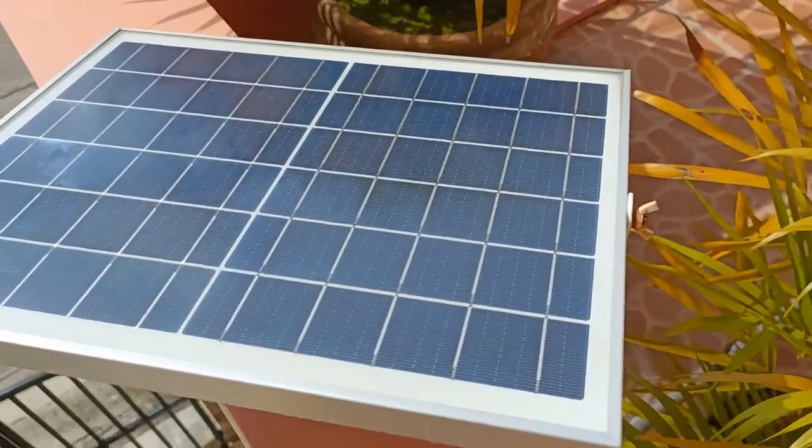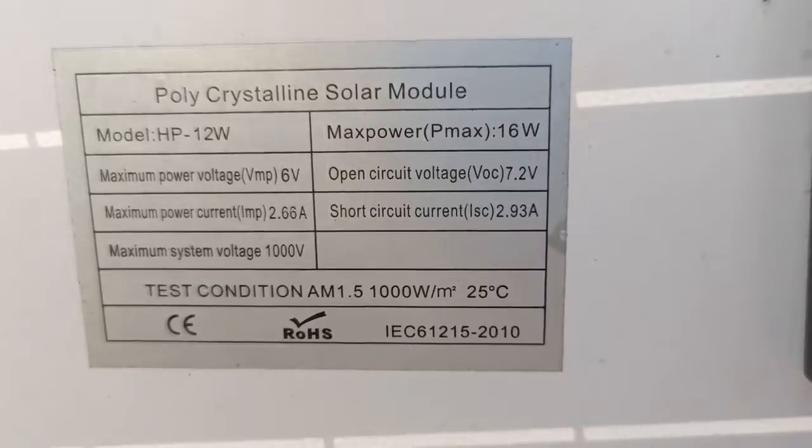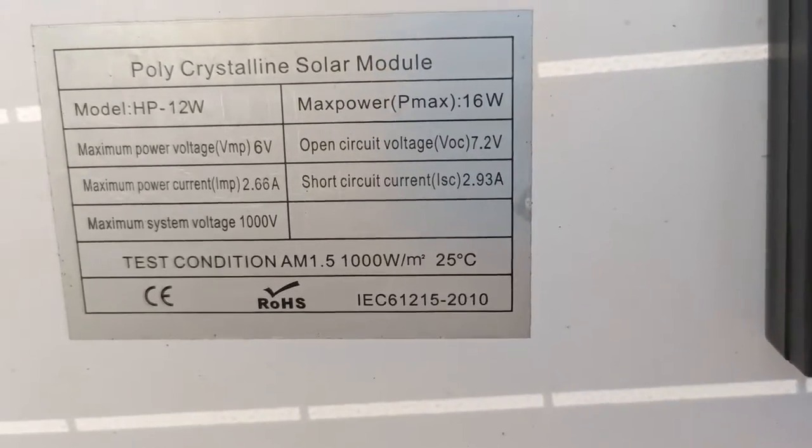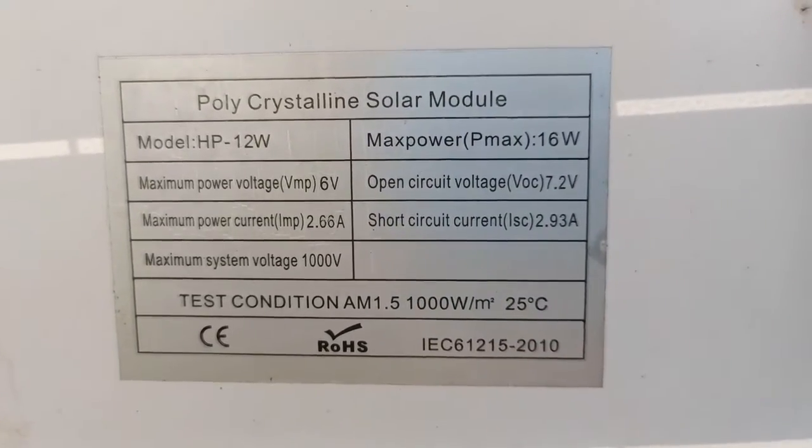First for the 40W solar panel, this is the 40W solar panel rated at 16W maximum power with open circuit voltage of 7.2V and maximum power voltage at 6V.